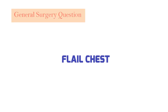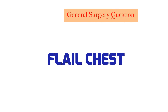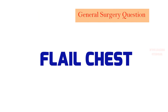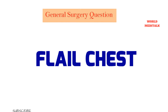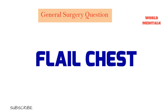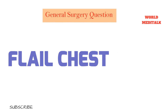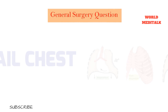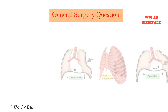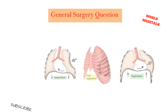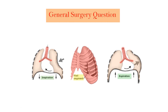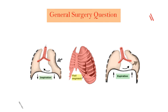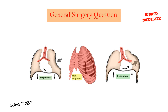Flail chest occurs when the chest wall disconnects from the thoracic cage due to multiple rib fractures — at least two fractures per rib in at least two ribs. It is associated with pulmonary contusion and abnormal chest motion. Management includes avoiding over-hydration and fluid overload.